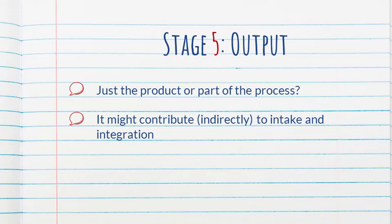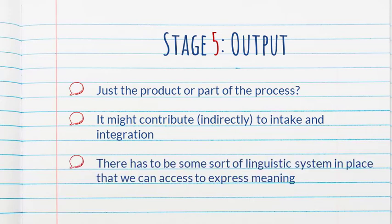I want to highlight the fact that this is a fifth puzzle piece. This implies that there has to be some sort of system in place, that we are accessing a linguistic system to express meaning, even if it's a developing system. And so we need to make sure that learners have had a chance to develop some sort of system first before we expect output.